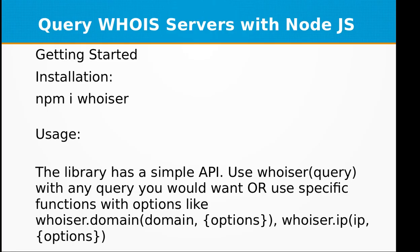The library has a simple API. You can use 'whoisit.query()' for any query, or use specific functions with options such as 'whoisit.domain(domainName, options)' or 'whoisit.ip(ip, options)'.